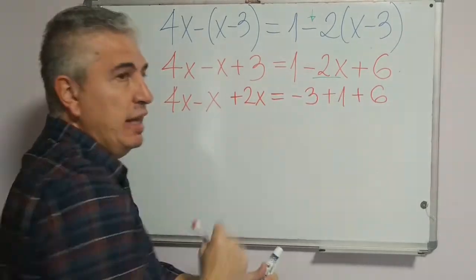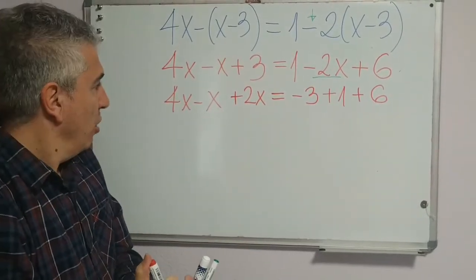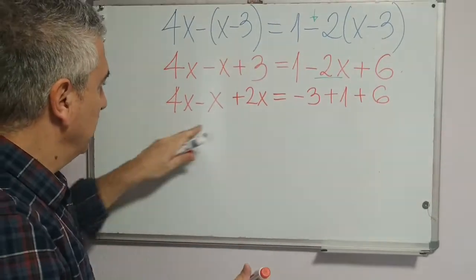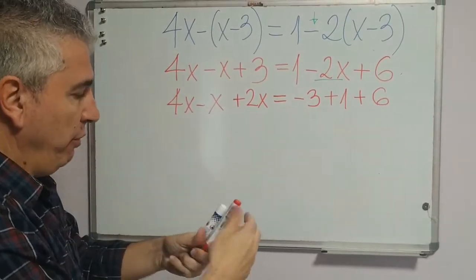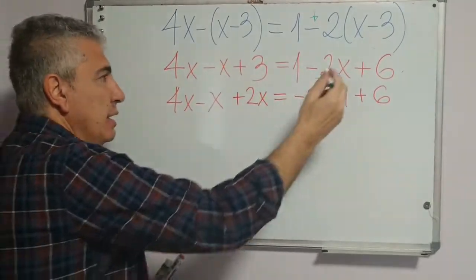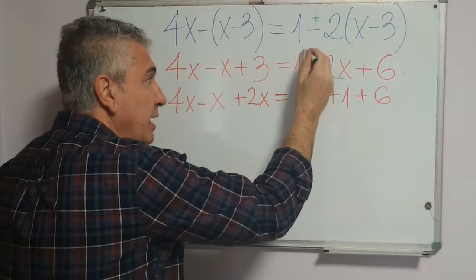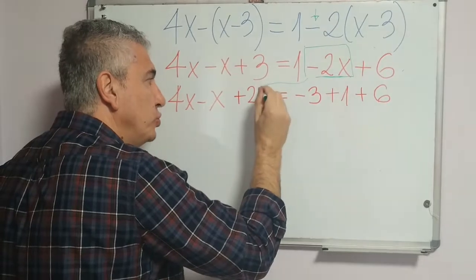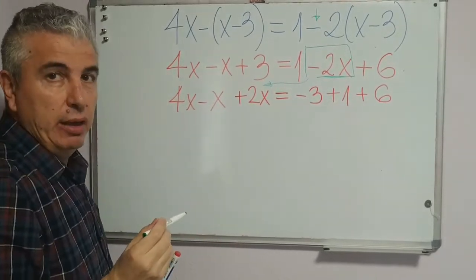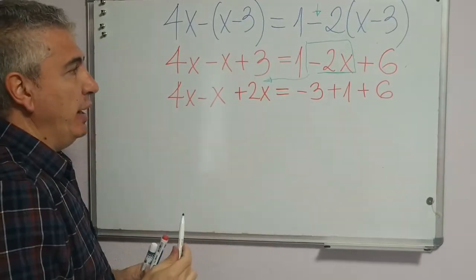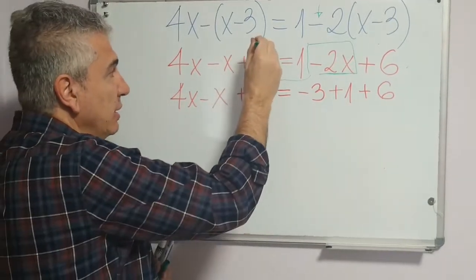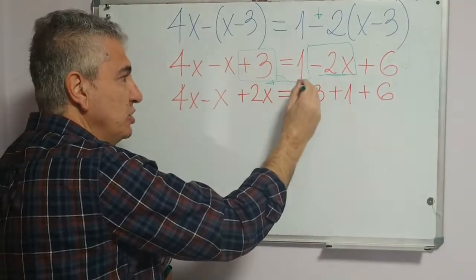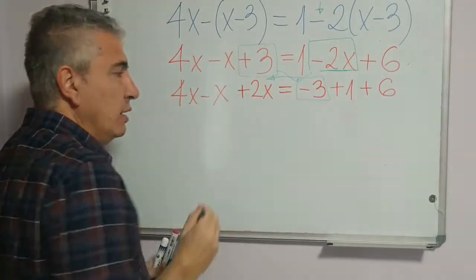The negative 2x disappears. Next step is to operate. Remember: it is the same as if the negative 2x moves to the left member changing sign to positive 2x, or the positive 3 on the left changes to negative 3 on the right.